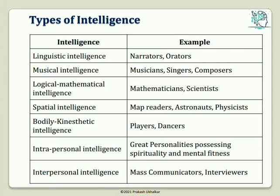Spatial intelligence is the ability to perceive visual or spatial information, change it and recreate visual images without reference to the objects, construct 3D images, and move and rotate them. For example, map readers, astronauts, and physicists.